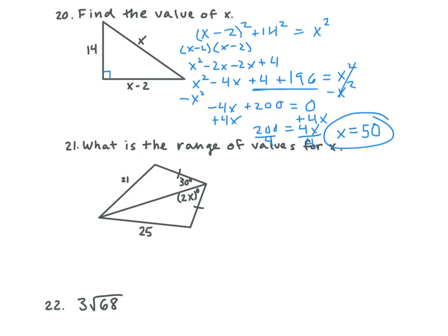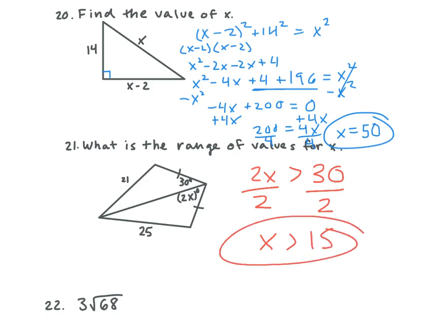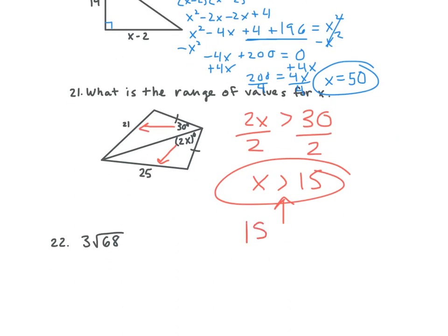Number 21 — what is the range of values for x? 2x is greater than 30. Then divide: x is greater than 15. On the test, you need to include a greater than or less than sign for these questions. A lot of people on the quiz just put x equals 15 — that is not right. X is greater than 15. You can also write it as 15 is less than x — it's the same thing.